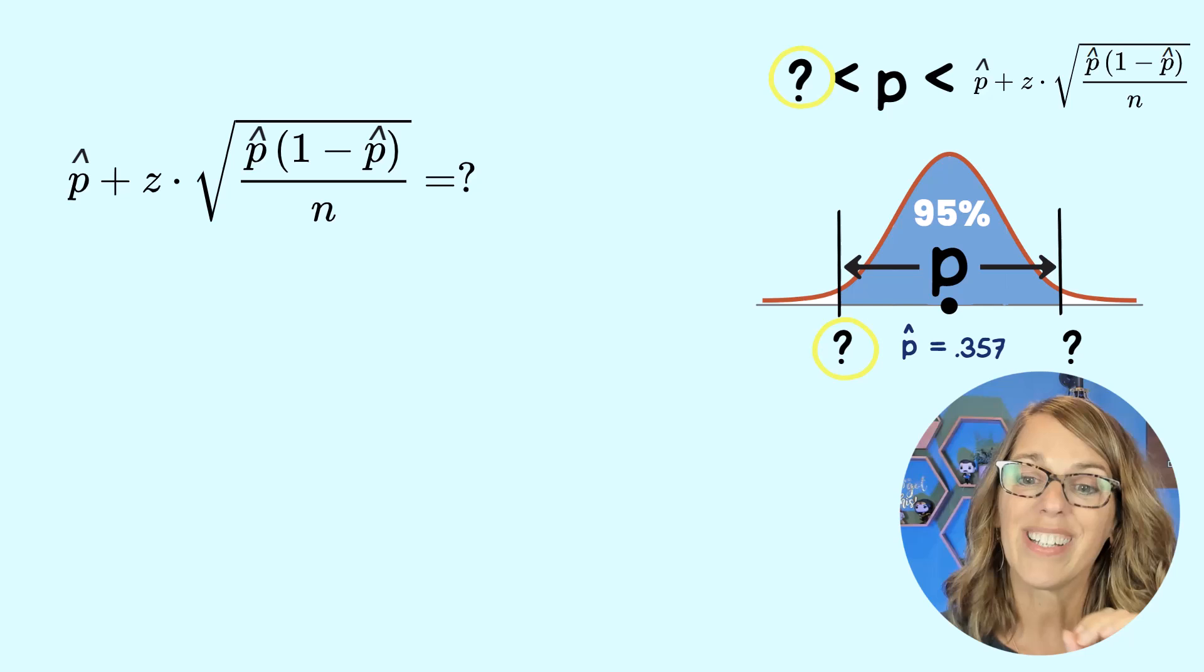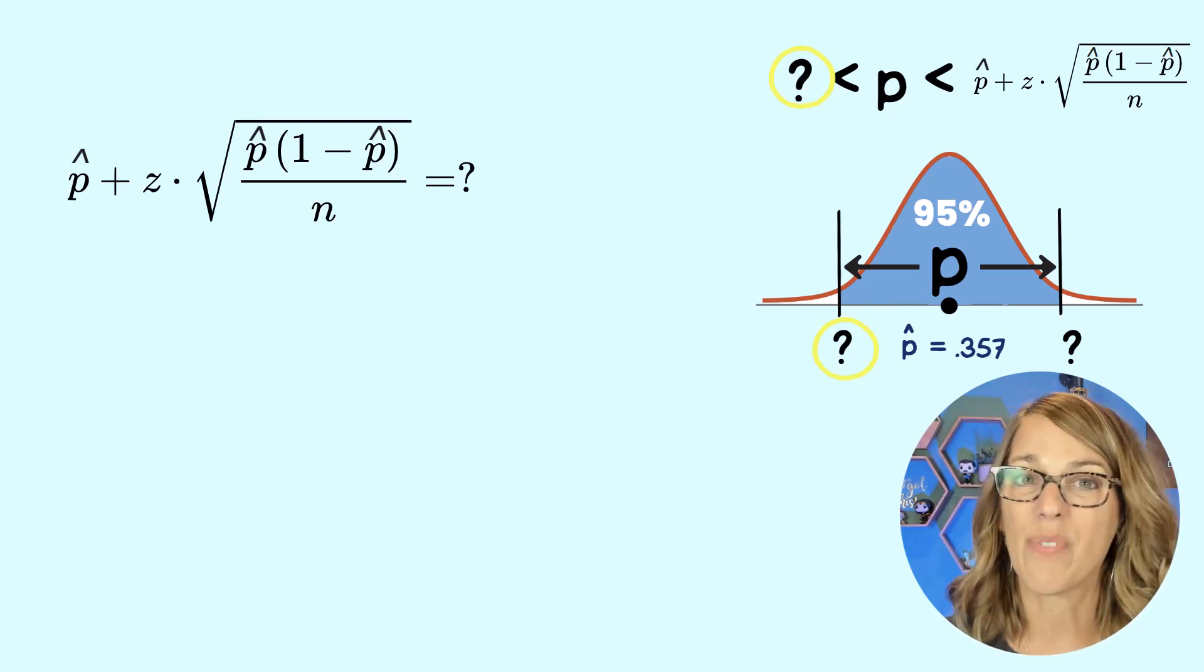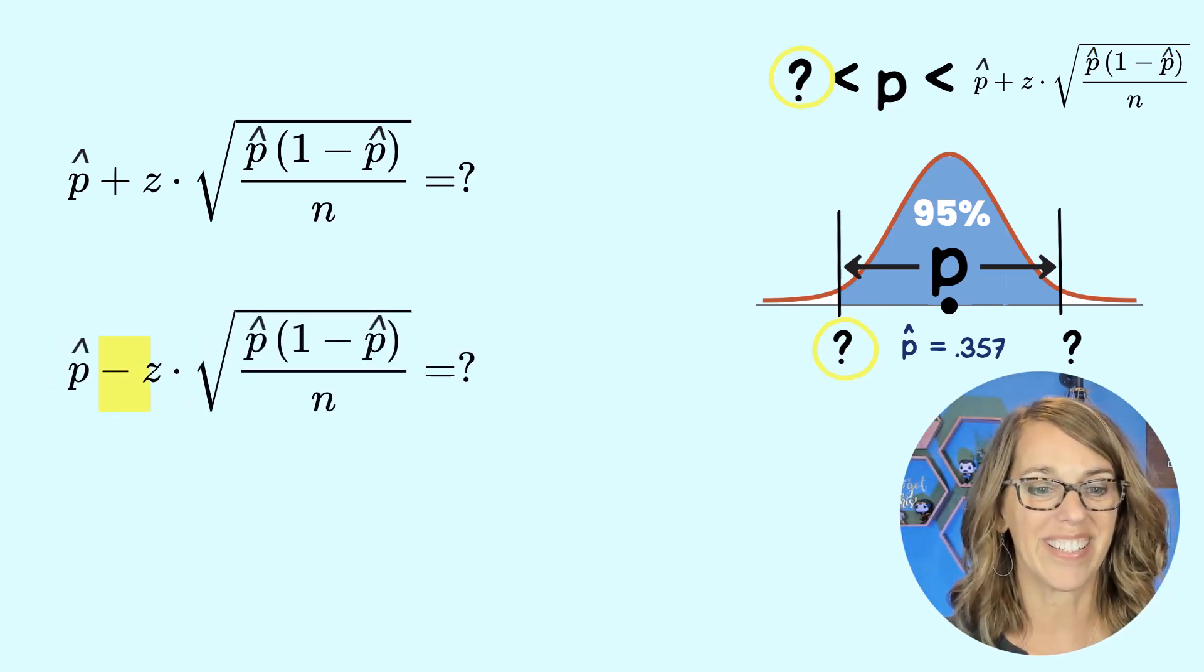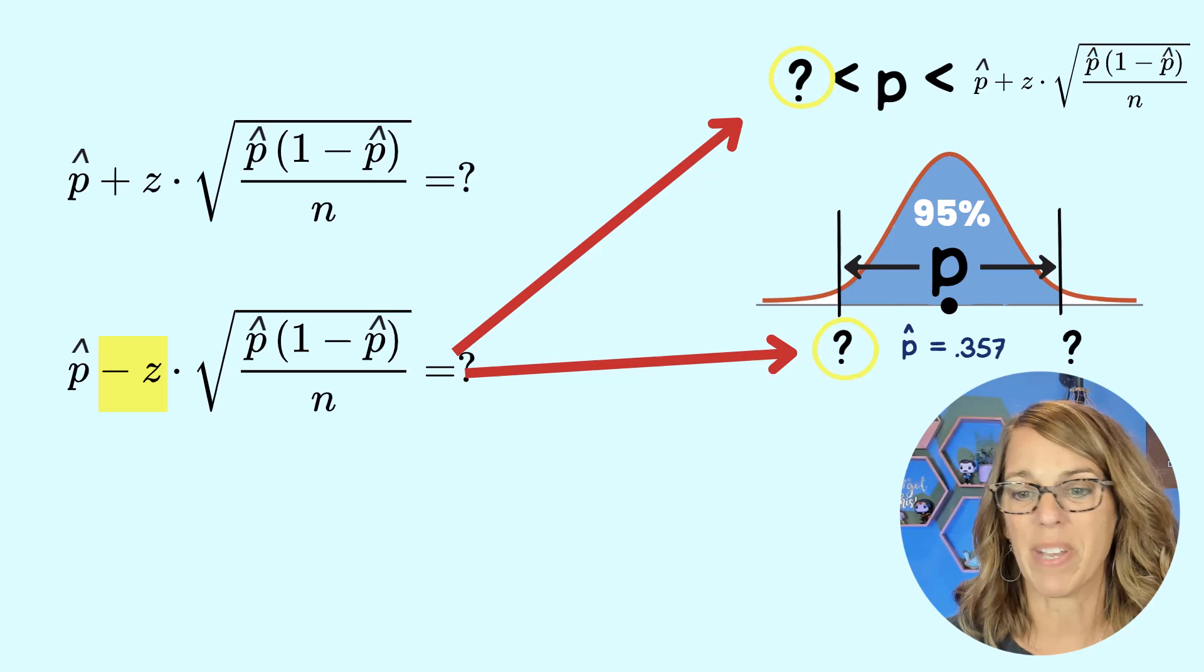Now we also need the lower limit, the proportion on the left-hand side. Its formula is almost identical. The only difference is that it has a negative Z since it's on the left. So I can put this in for that lower limit.